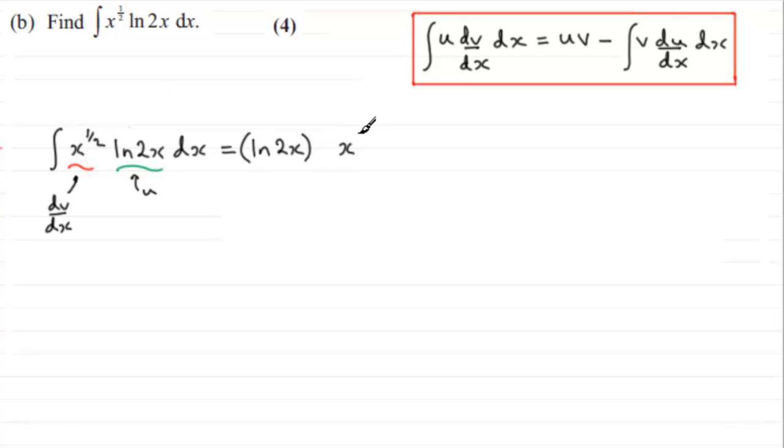And now v is the integral of dv by dx. So if I integrate x to the power half, then in the usual way, add one to the power - so that's x to the power one and a half or three over two - and then divide by three over two. So three goes there and the two ends up there, and we'll put that in brackets as well.